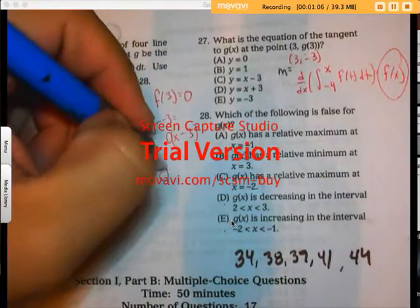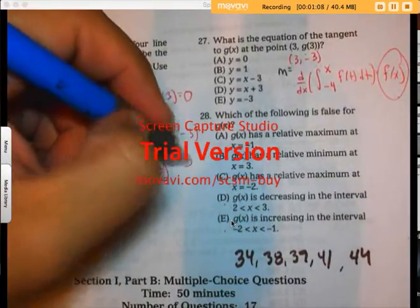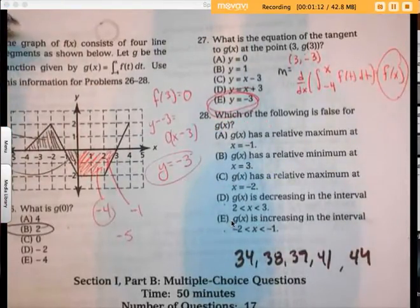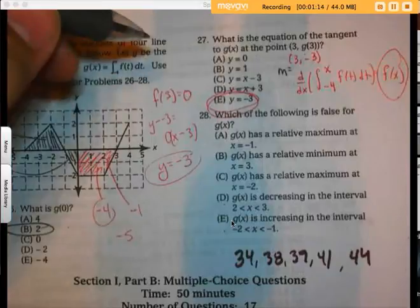So what I get is y equals negative 3. With 40 seconds left, let me walk you through that one more time.